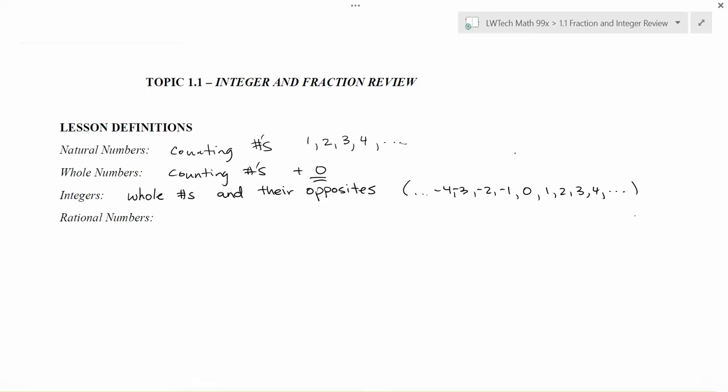The final number system that we're going to talk about on some of our problems here in the next couple of days is rational numbers. And a rational number is just any number that can be written as a fraction. This actually includes a lot of different values.